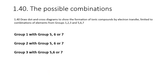Thankfully, the specification actually specifies specific combinations of elements for which you need to be able to do this. I'll go through every single possible combination, and once you've done and practiced all of these, there's no question in the exam you wouldn't be able to do. You have group 1 elements with groups 5, 6, or 7; group 2 with 5, 6, or 7; or group 3 with 5, 6, or 7.